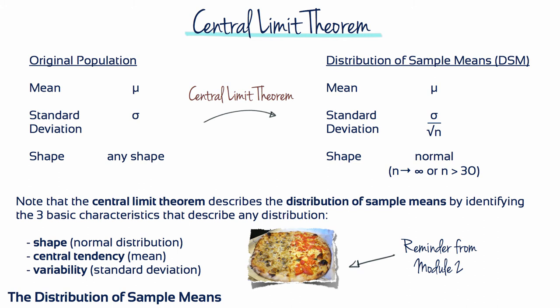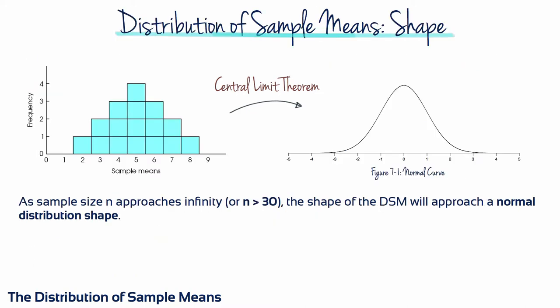The essence of the central limit theorem is that for any population with mean mu and standard deviation sigma, the distribution of sample means for sample size n will have a mean of mu and a standard deviation of sigma divided by the square root of n, and will approach a normal distribution as n approaches infinity.